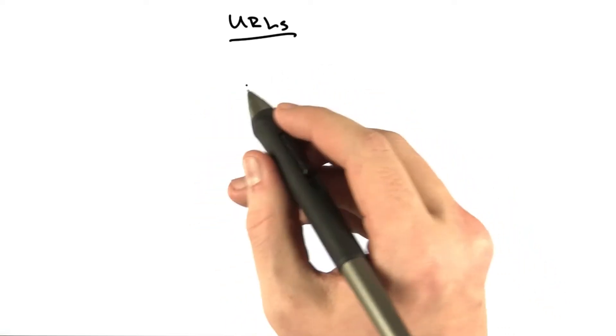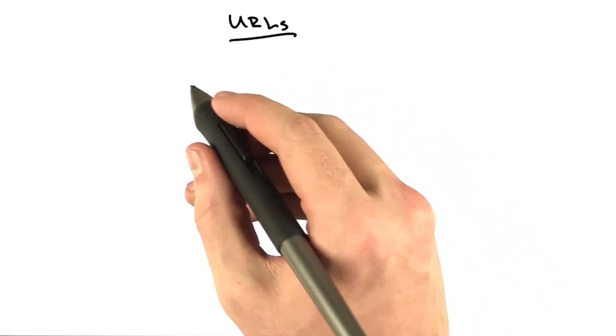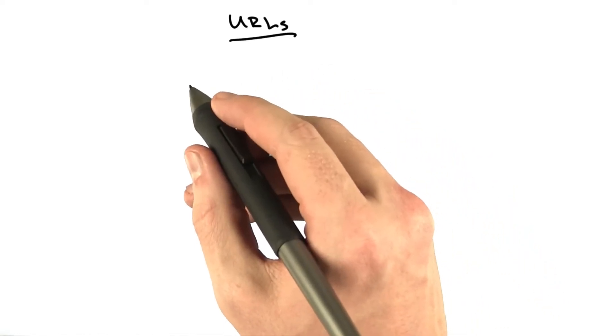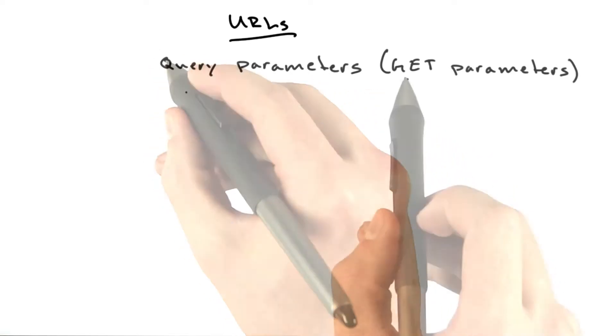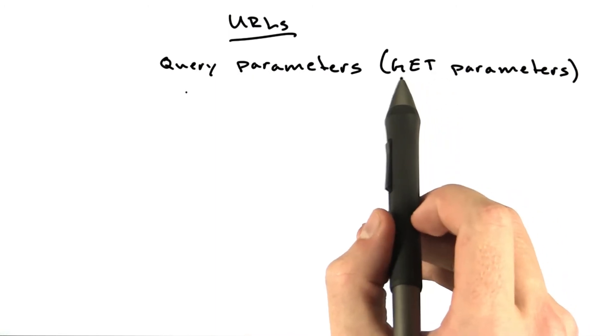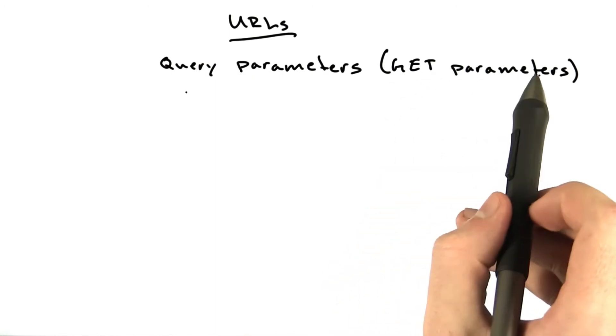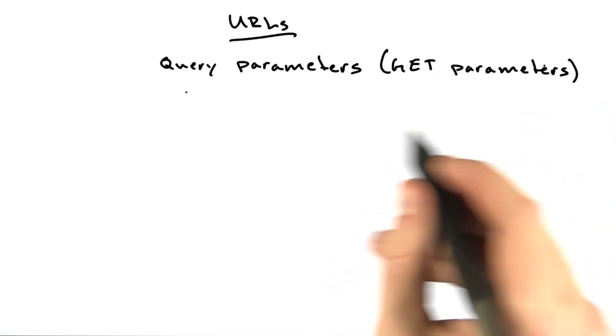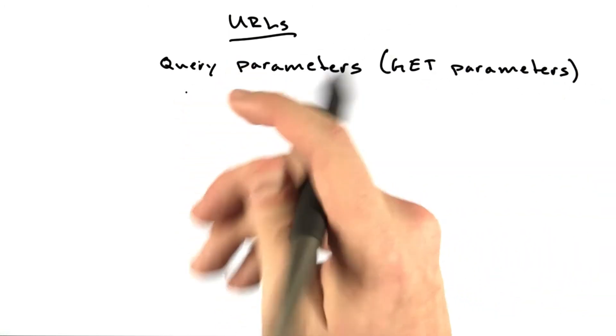Let's add something new to our URLs called a query parameter, also known as GET parameters. We'll talk about this name shortly when we start talking about HTTP.